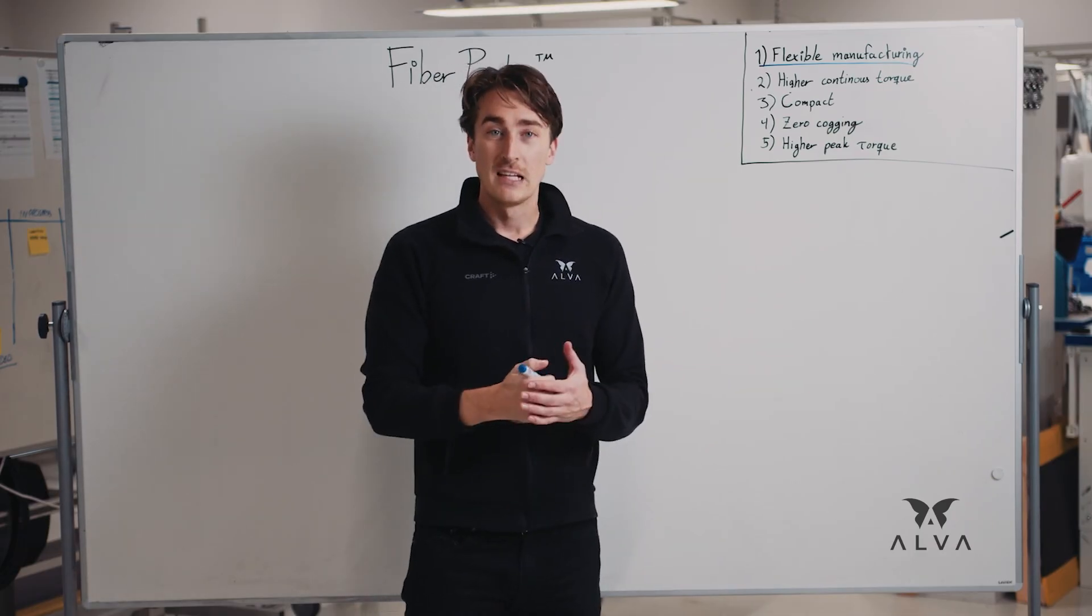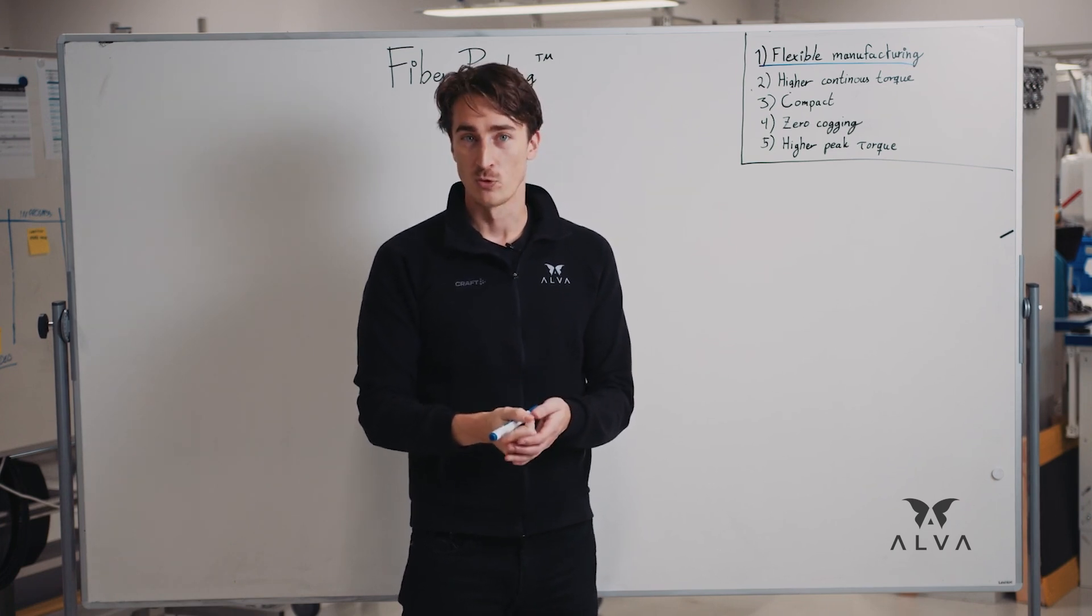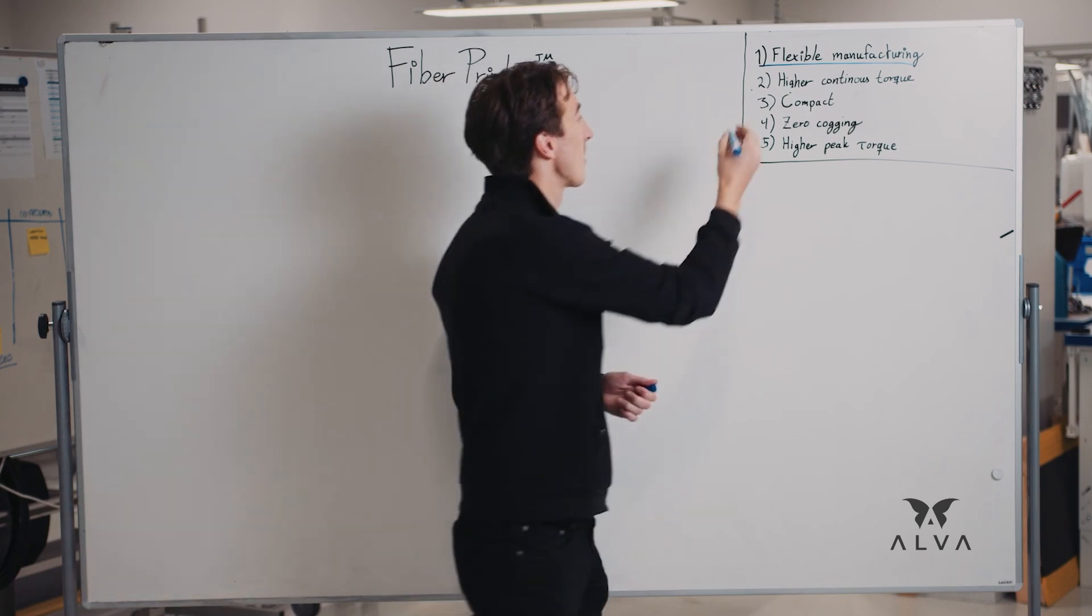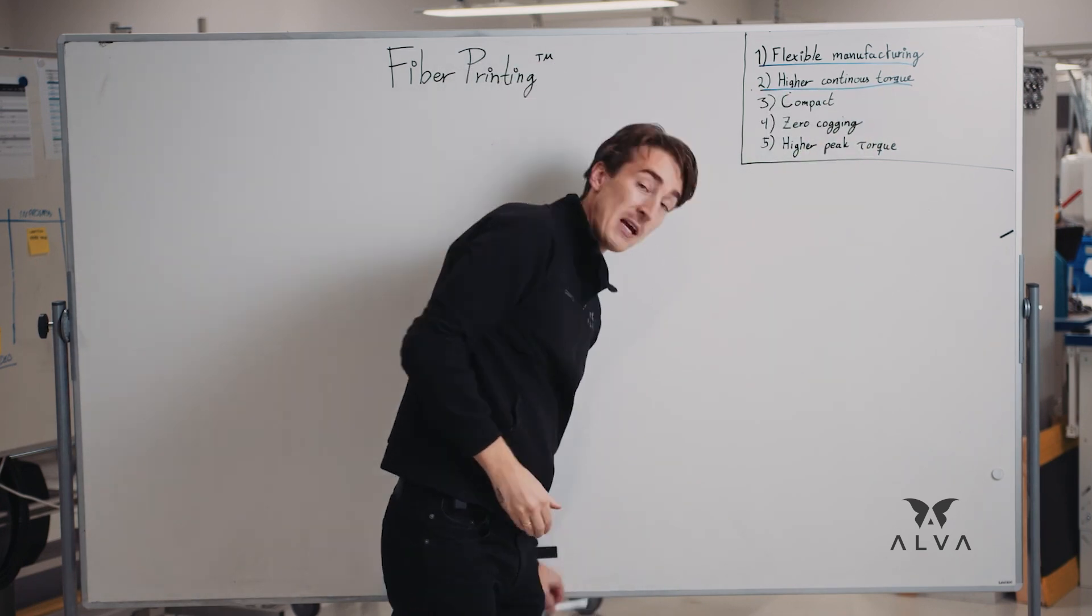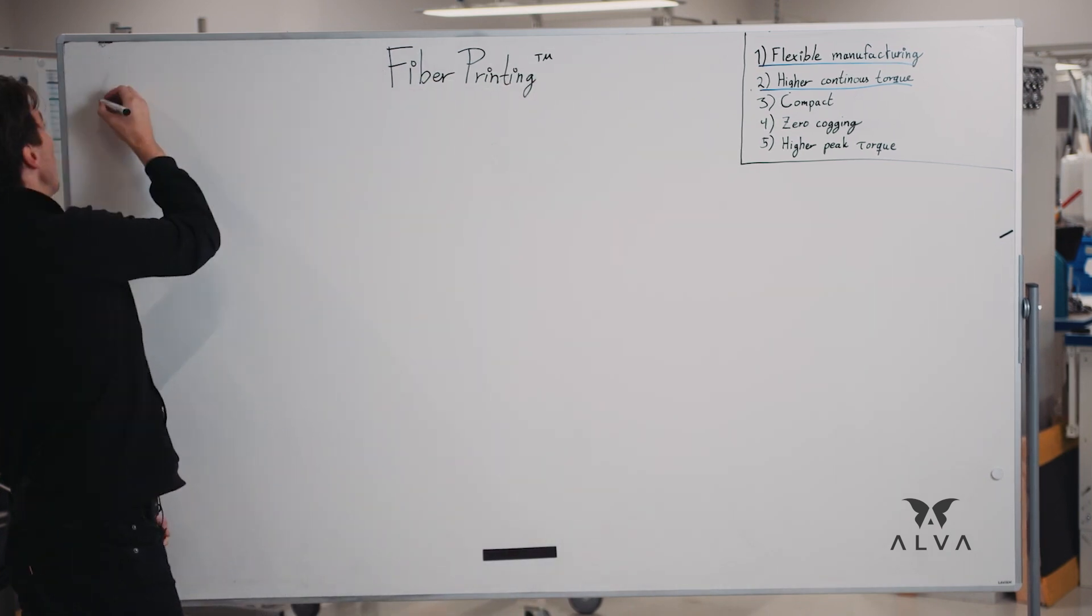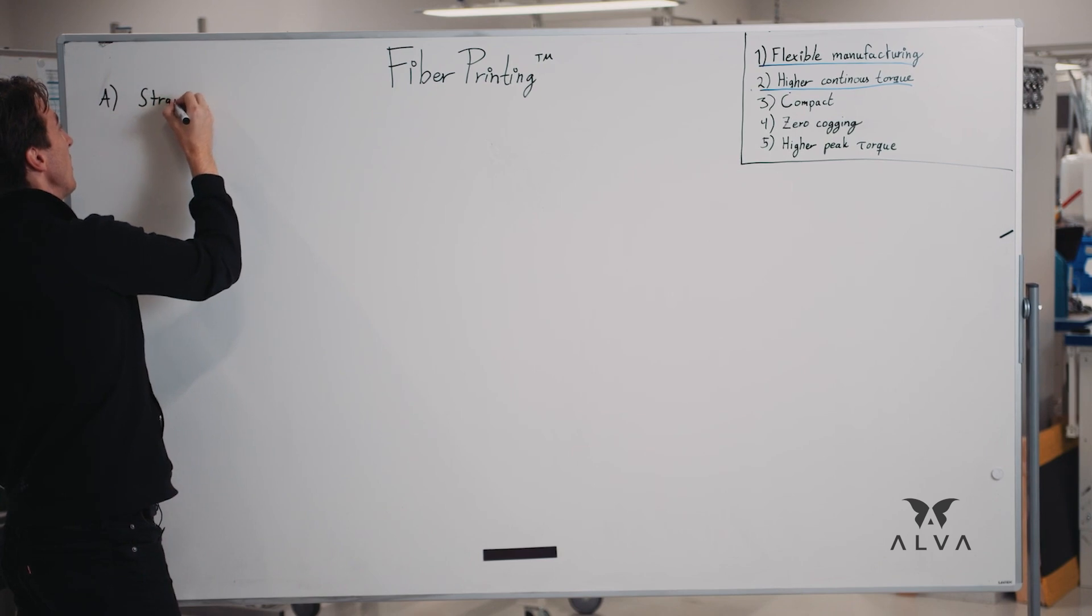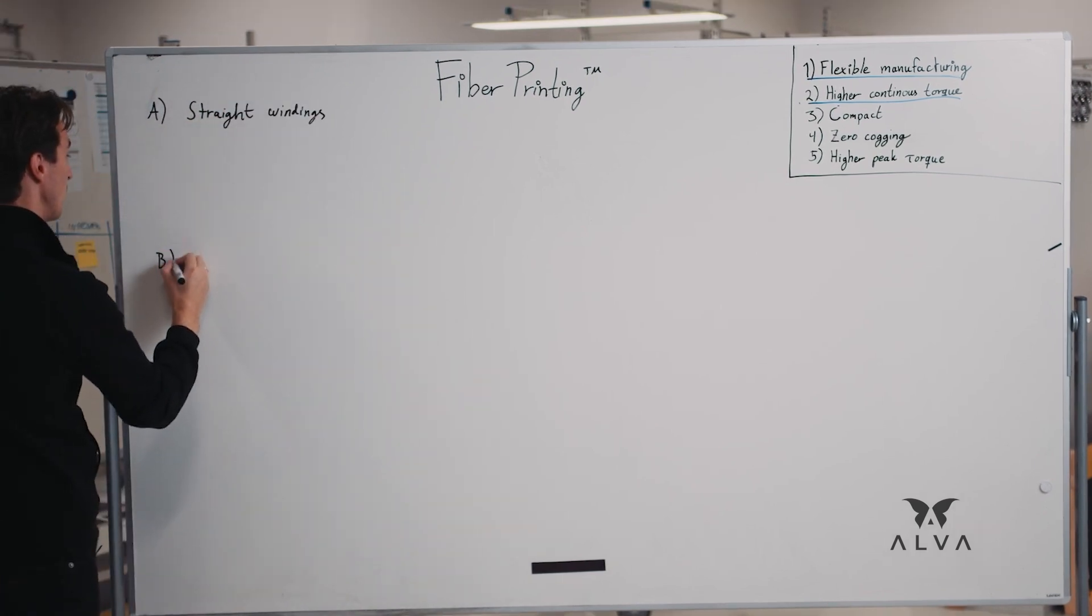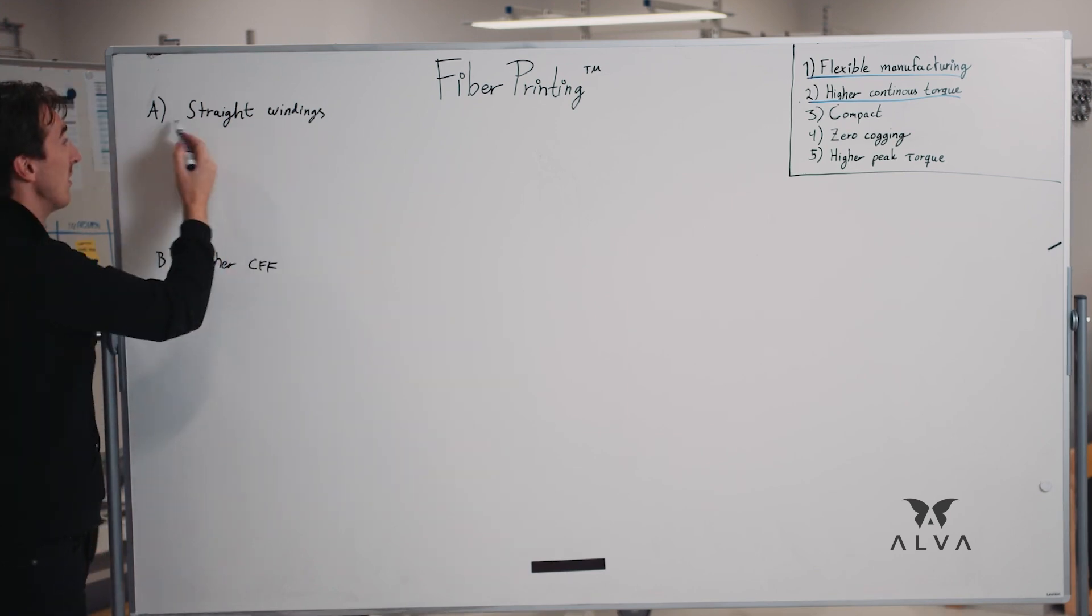All right secondly, let's look into why fiber printed motors have higher continuous torque than traditional ironless or slotless motors. The main reason for this is twofold. Number one due to straight windings and number two due to higher copper fill factor. Let's start with this one.